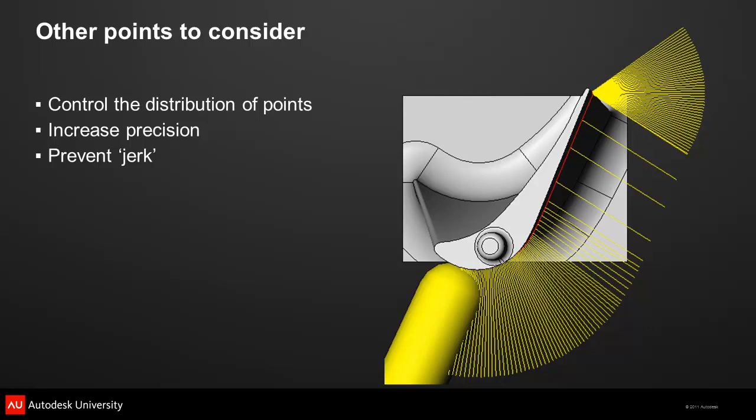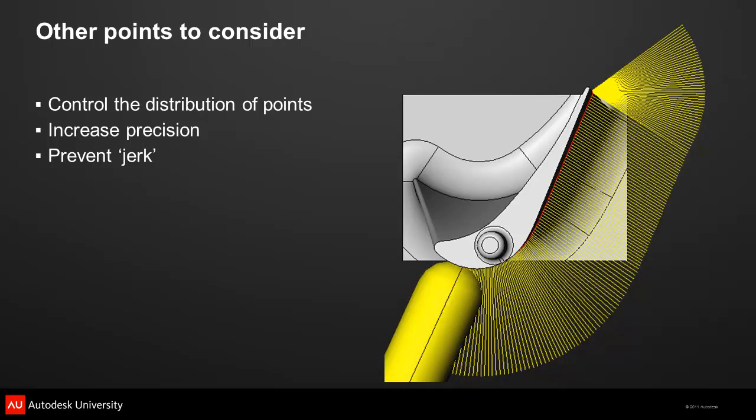Along with the shape of the toolpath, you need to be concerned with the distribution of points along the path. If the distance between the points varies too much, you'll have a problem with the way the machine accelerates and decelerates. In this example, toolpath analysis shows an uneven distribution of points — there is a high compression of points as the tool swings around the edges and large gaps in between. This will have a bad effect on the acceleration of the machine and produce a terrible finish. By limiting the distance between points, you can produce a smoother toolpath and improve the performance of the machine.